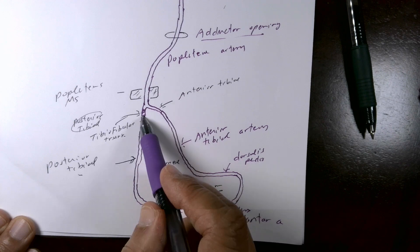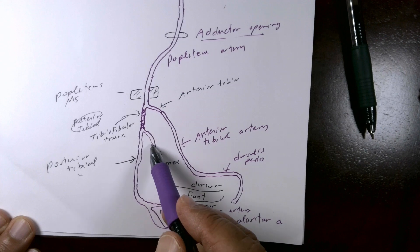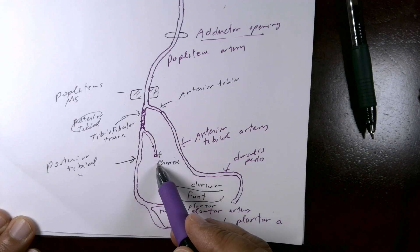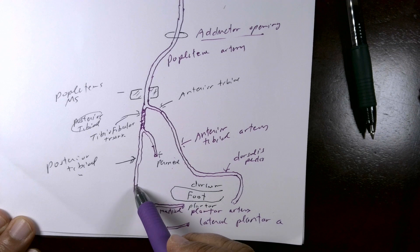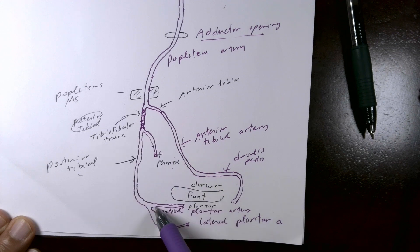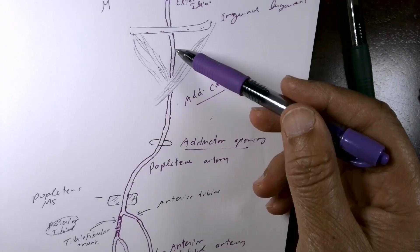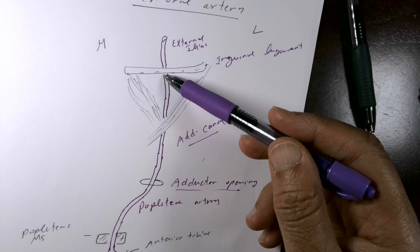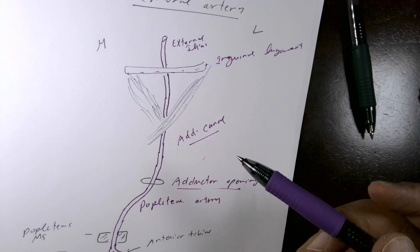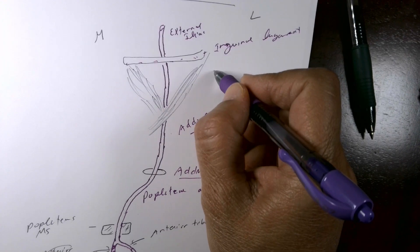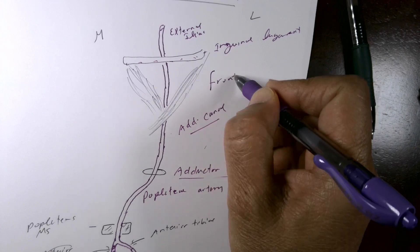The tibiofibular trunk divides into the peroneal artery and the posterior tibial artery. The posterior tibial artery splits in the plantar surface of the foot into medial and lateral plantar arteries.